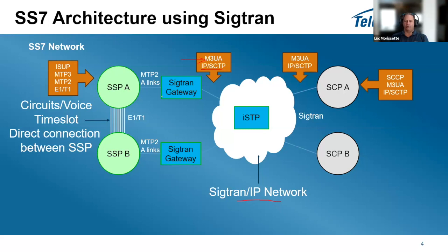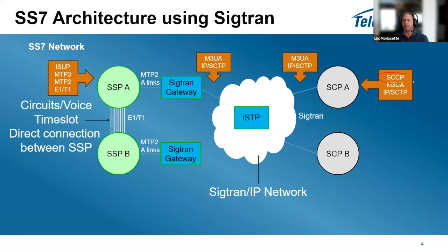From the SIGTRAN cloud, traffic can go to other SSPs or to SCPs — traditional control points with database access for LNP, number portability, and 800 numbers. SCCP can run over M3UA if SIGTRAN-enabled, or through another SIGTRAN gateway interfacing with the new network. Importantly, circuit voice still runs over TDM; only the signaling goes over IP. The real voice still goes through TDM on E1/T1.